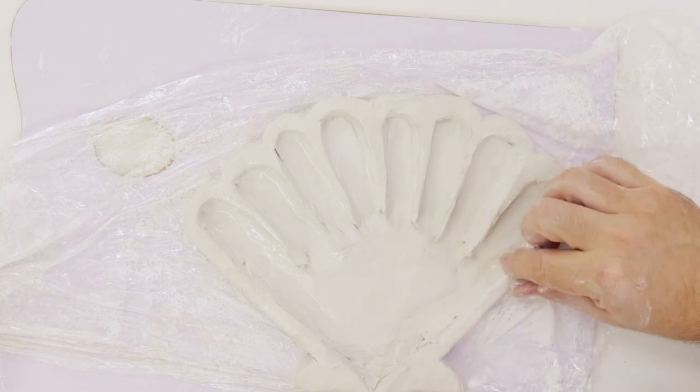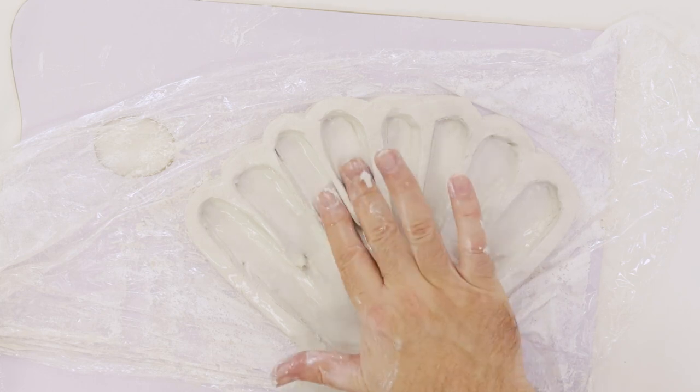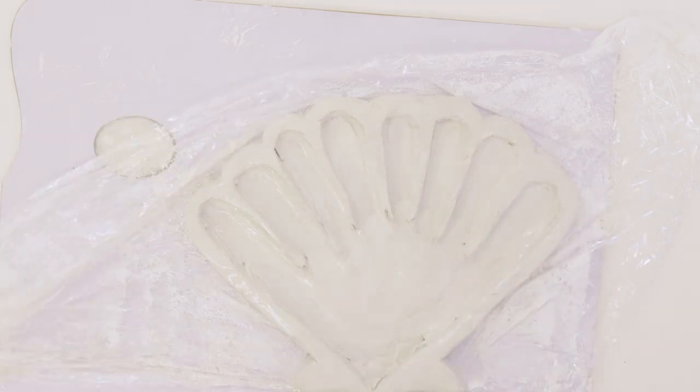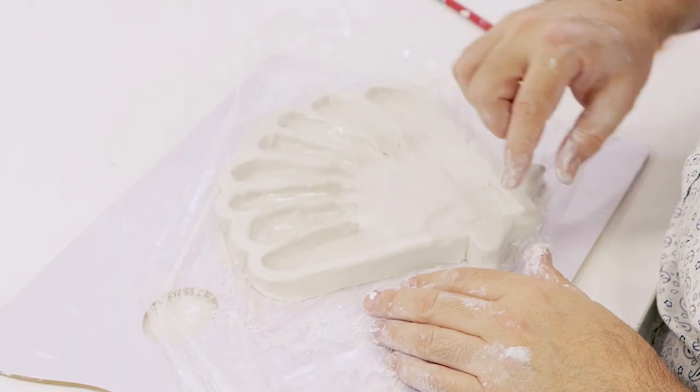To smooth it out, we dip our fingers into water and then smooth off and level the bottom of the palette. If there are any areas where there has been too much clay removed, we can add bits of clay and blend it in.